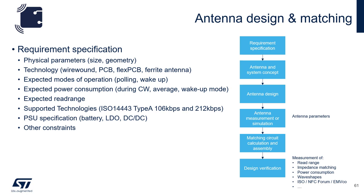Once these parameters are determined, we go to antenna design. You can use an online tool that ST has, or very simply, for most of the readers we provide, we suggest a two-turn antenna with an inductance value somewhere between 200 nanohenries and 2 microhenries. From there, you would measure the parameters of the antenna after you've designed it, then use that to simulate and calculate the matching components for the circuit. From there, you would go to design verification, where you would measure things like read range, impedance matching, power consumption, wave shapes, and any ISO, NFC Forum, or EMVCo testing that's required.